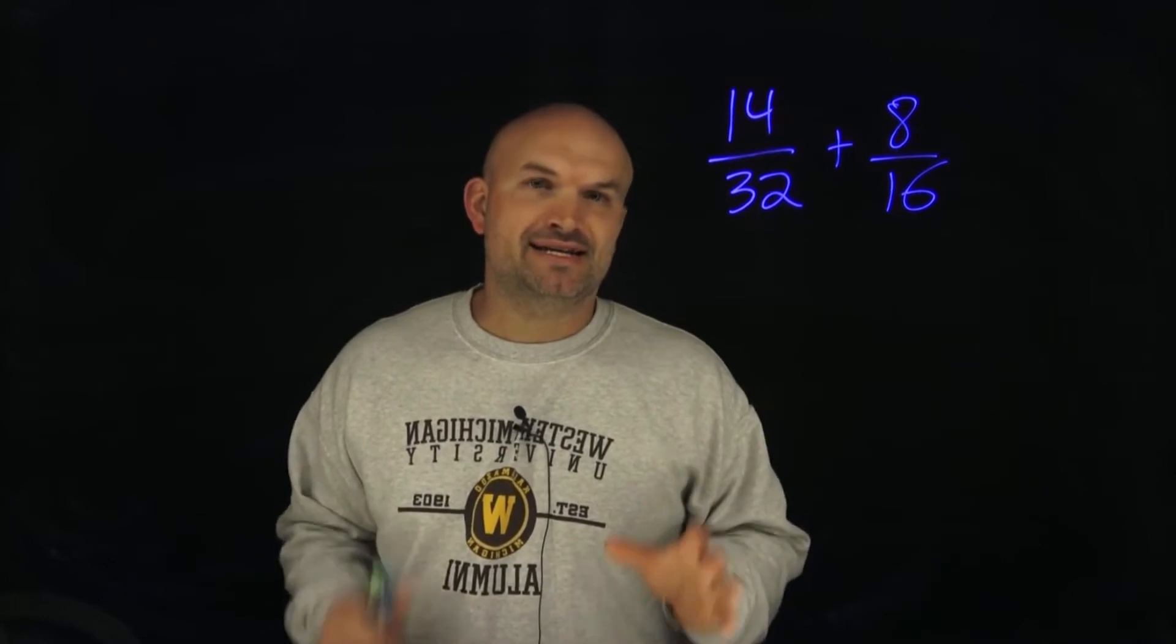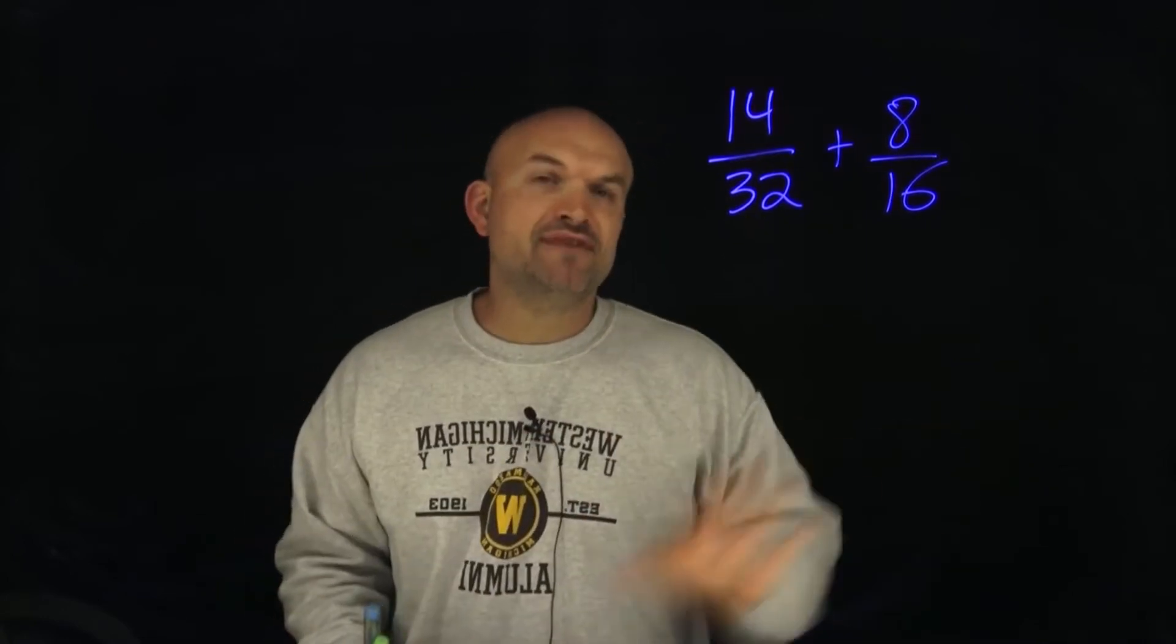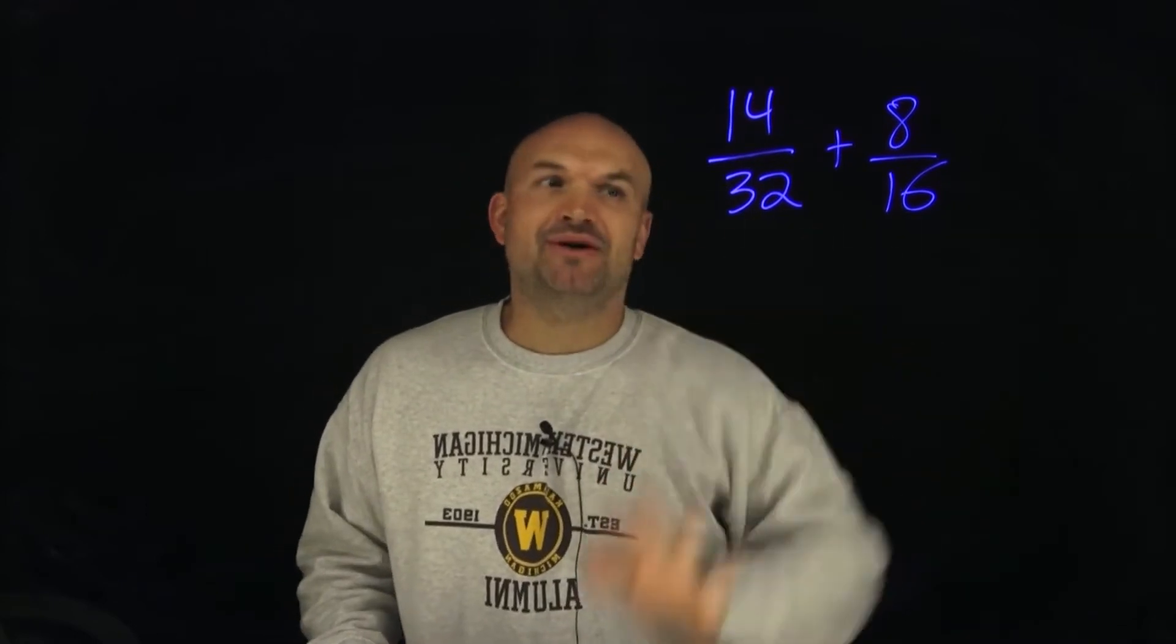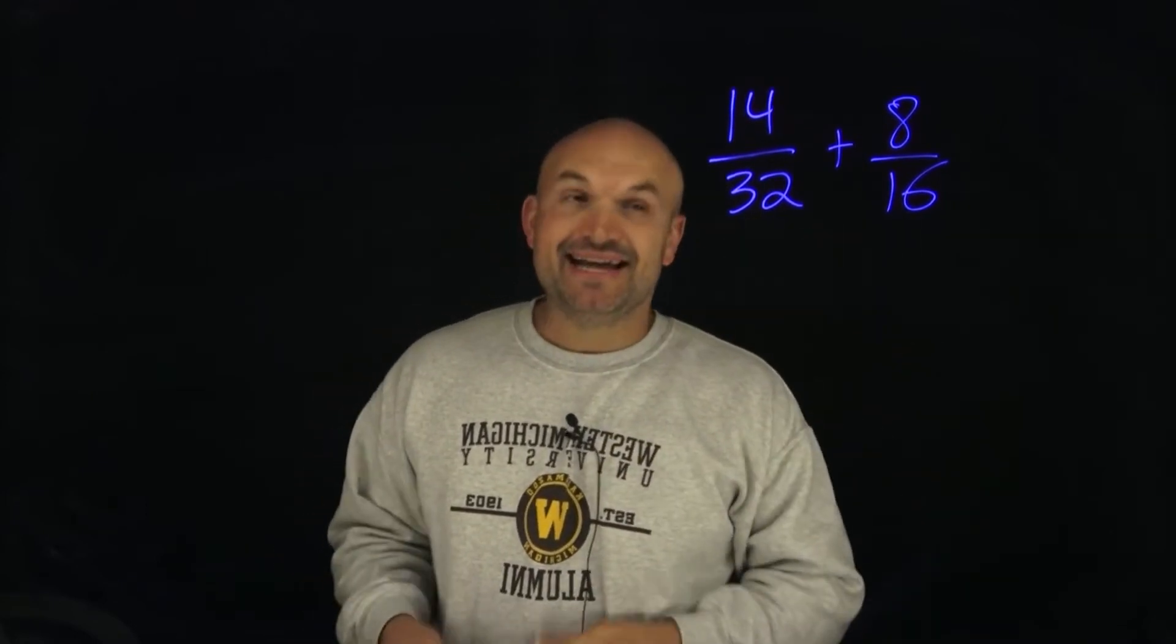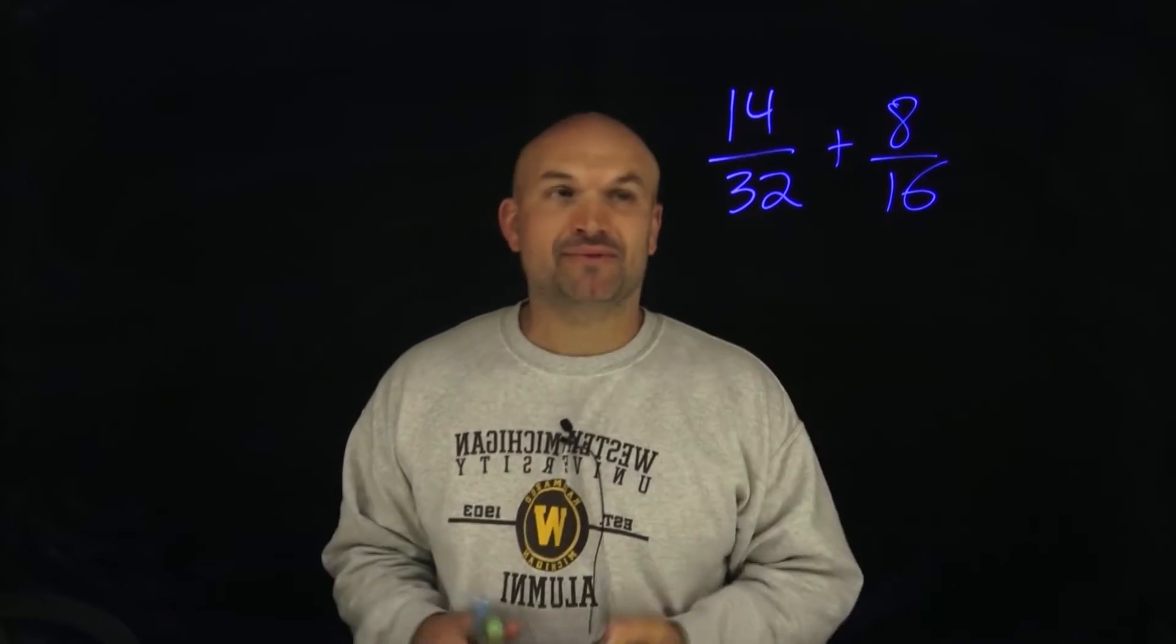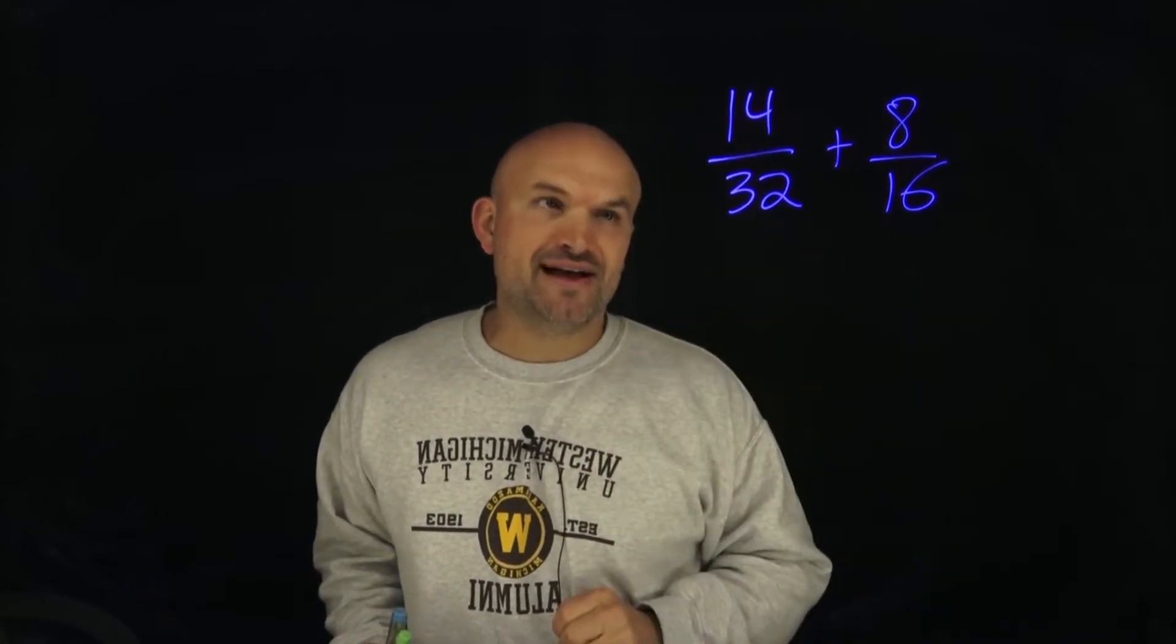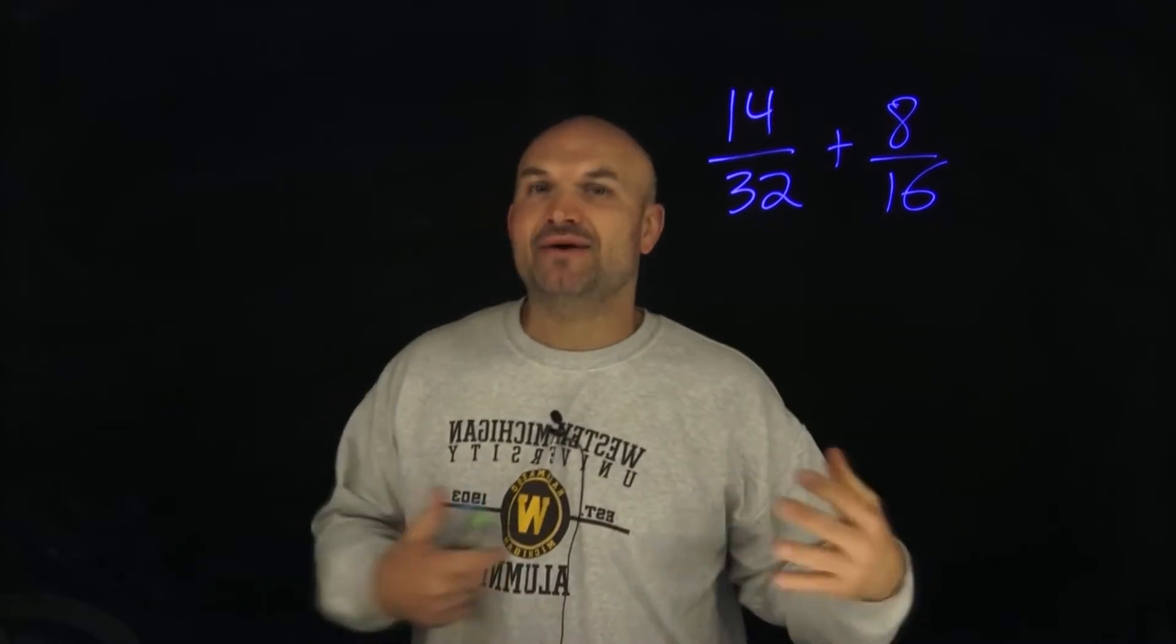And one thing that students will recognize is one of the tricks a lot of times when we're trying to find a common denominator is multiplying the two denominators. I think you can agree we don't want to multiply 32 times 16, especially if we don't have a calculator with us. That is going to produce pretty large fractions that we're then going to have to add and then simplify.